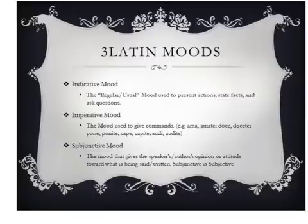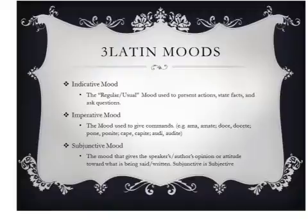Now we'll learn the third and final mood in Latin. We've learned the first two already. The first is the indicative mood, which is the regular or usual mood that we use in Latin. We use this to present actions — 'the boy is running' — state facts, 'he is tall,' or ask questions, 'why are you here?' Most of the time, we are using the indicative, and so we don't even think about it when we use this mood.